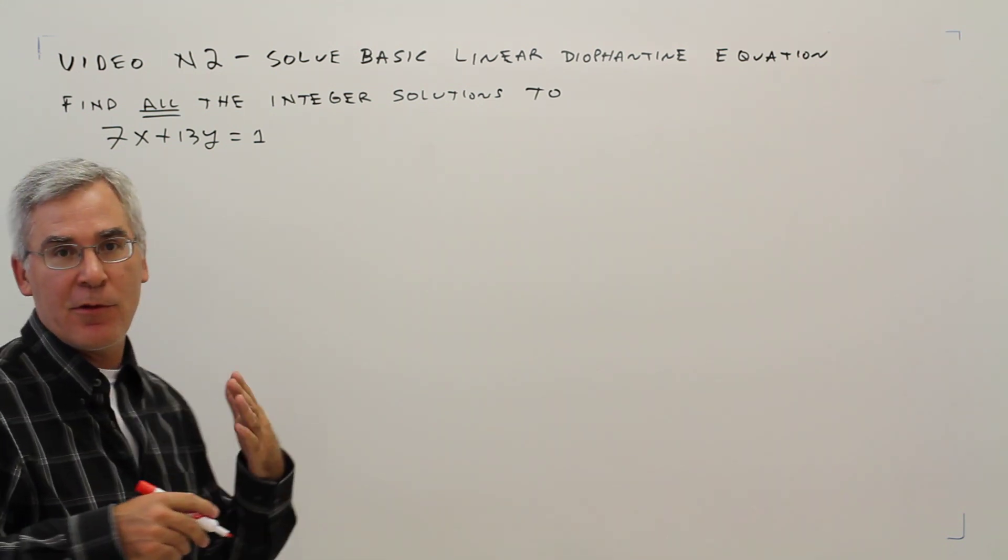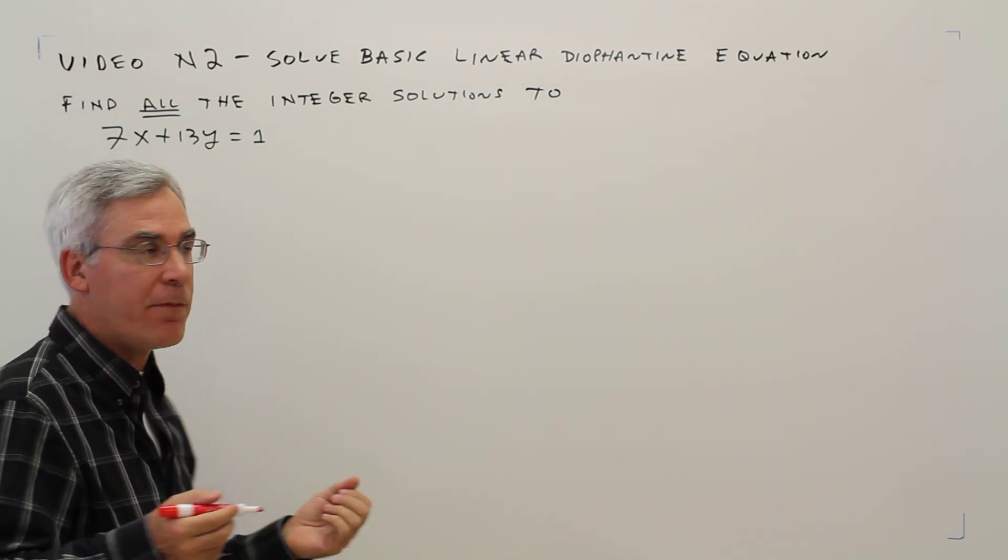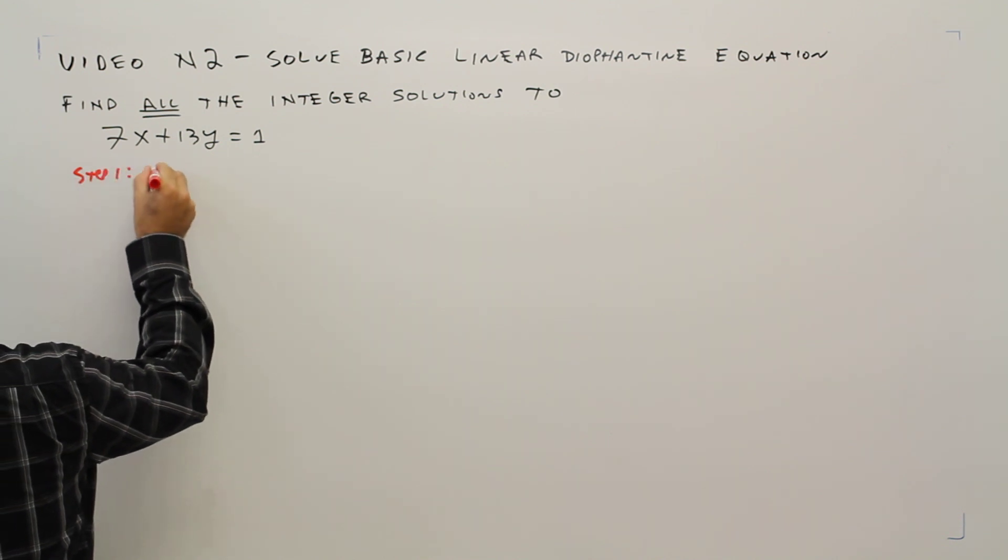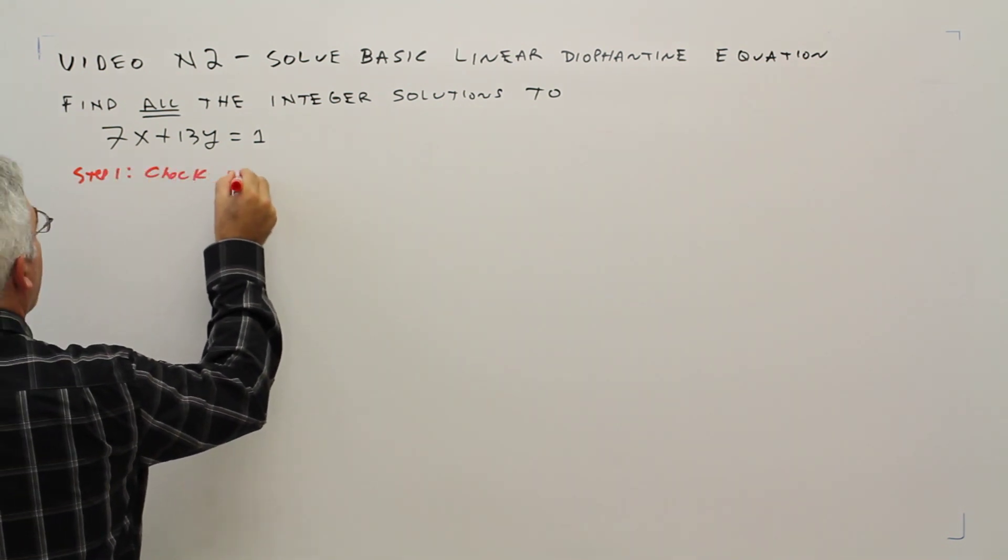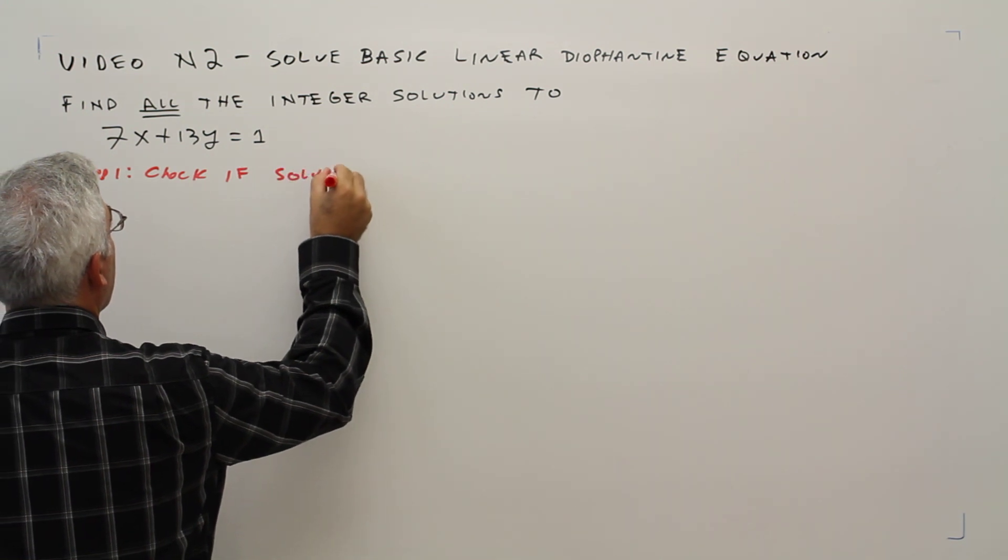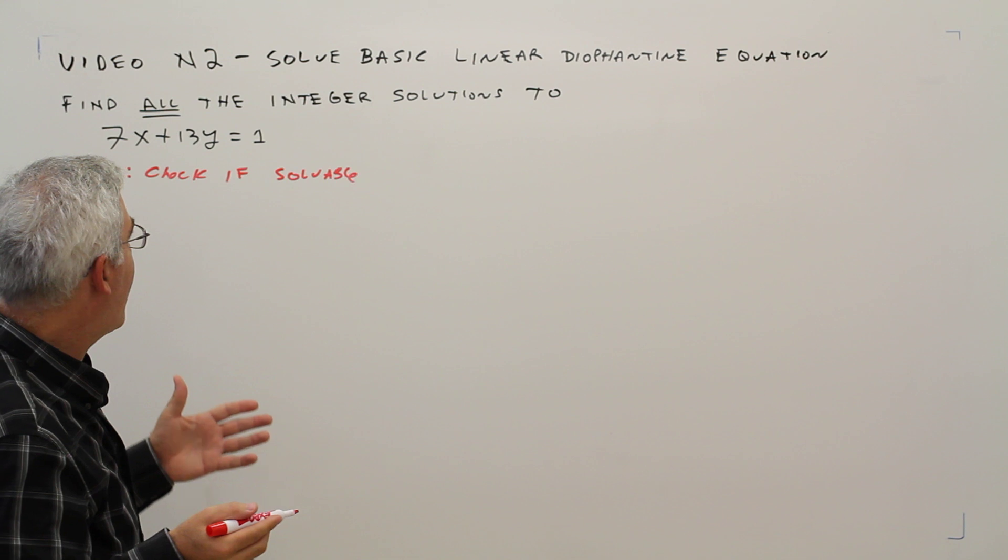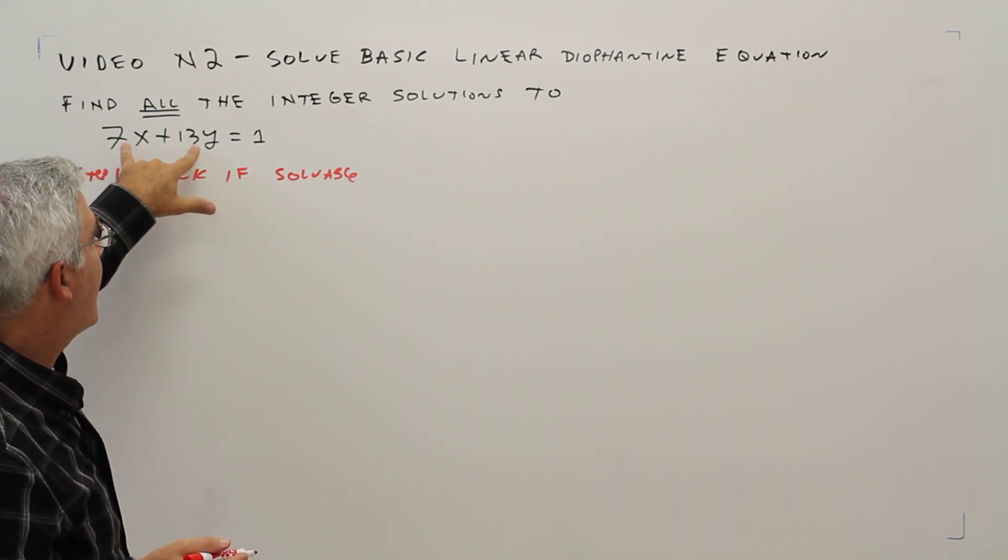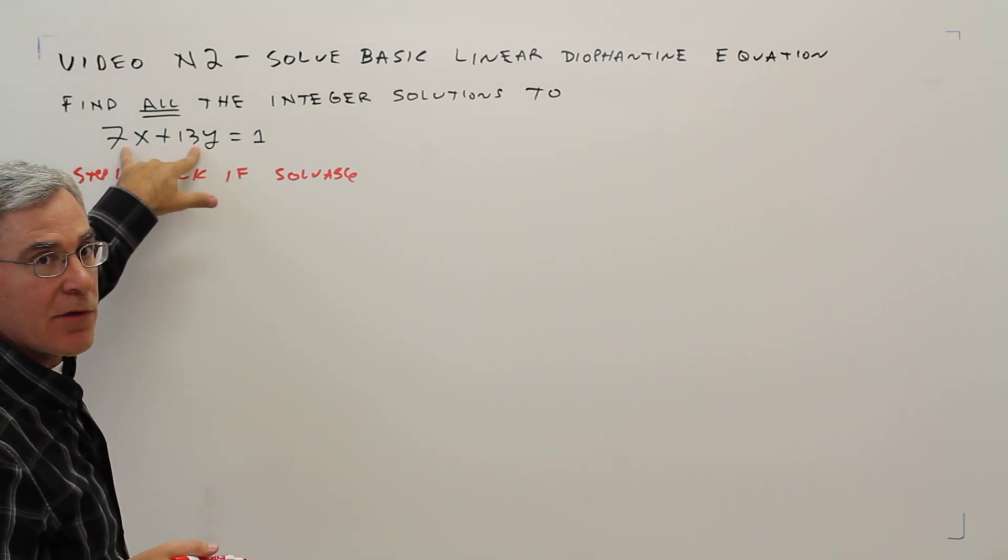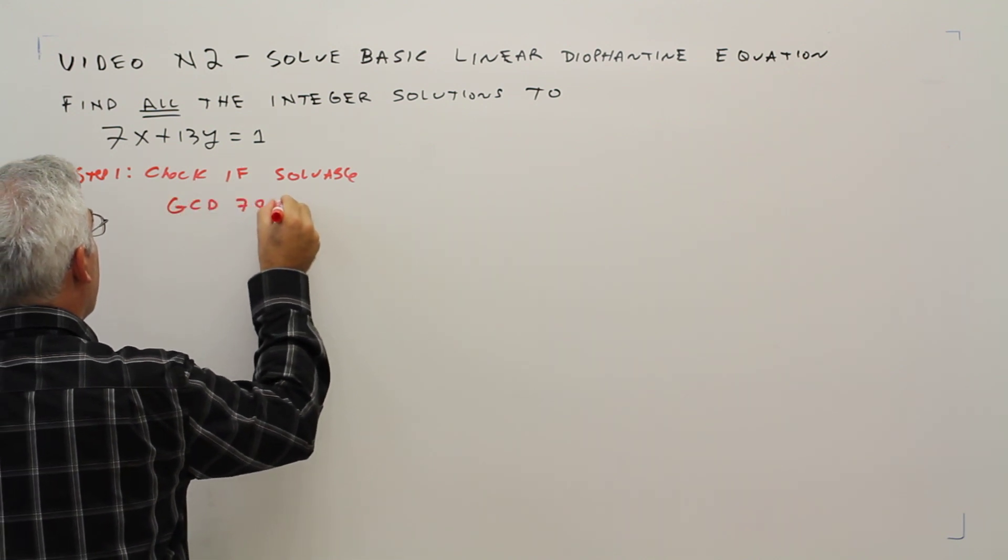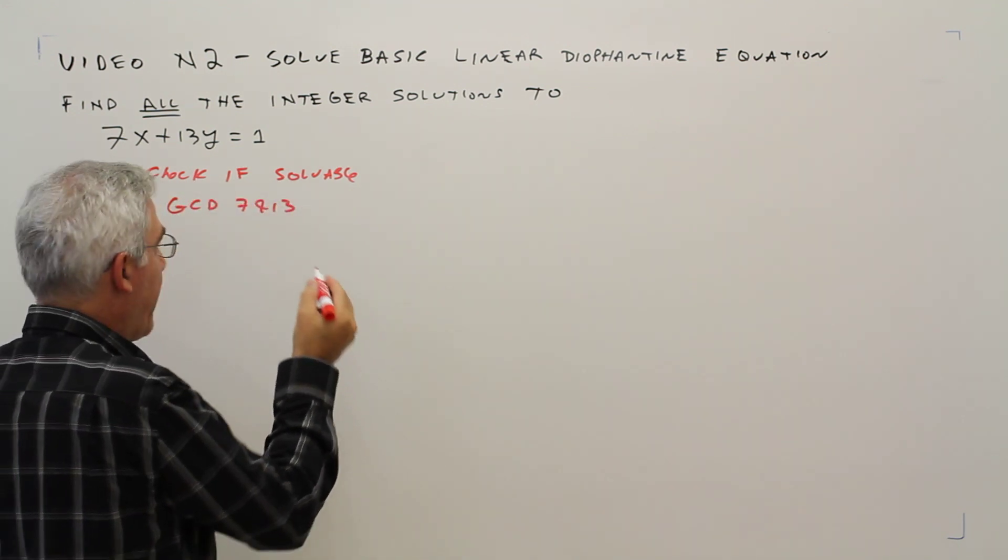Alright, so I'll do this in a three-step fashion. Step 1: check if this is even solvable. To check if it's solvable, you find the greatest common divisor of 7 and 13. So the GCD of 7 and 13, which happens to be 1.